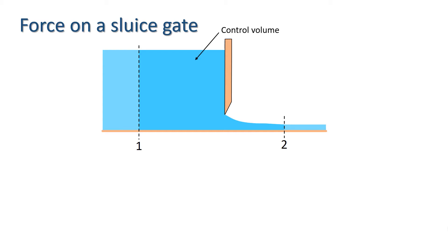First, we choose a control volume, which I will form by taking two cross-sections some distance upstream and downstream of the gate, denoted here as cross-sections 1 and 2.